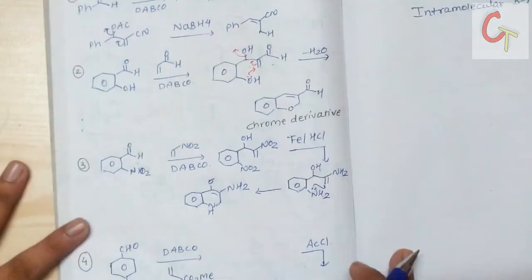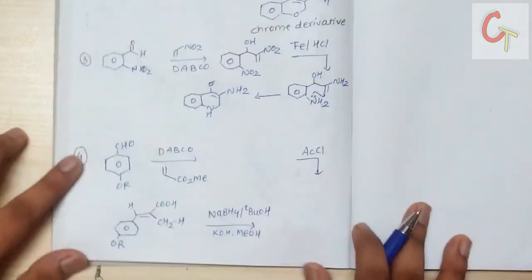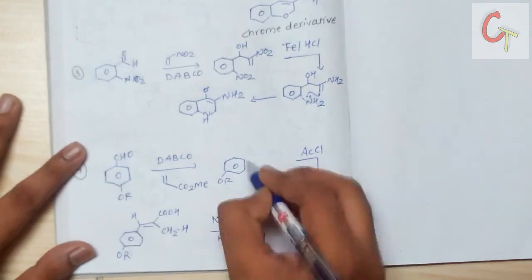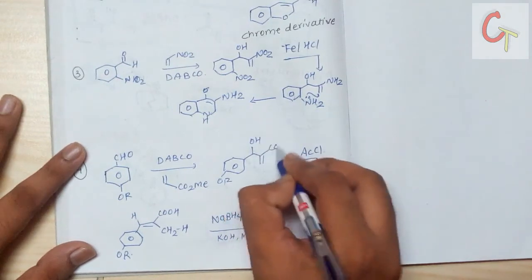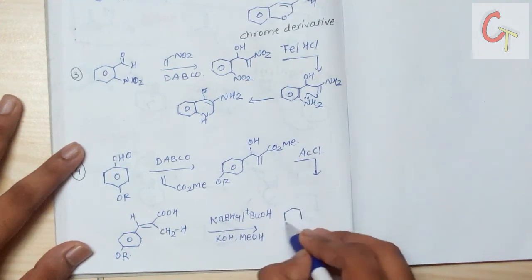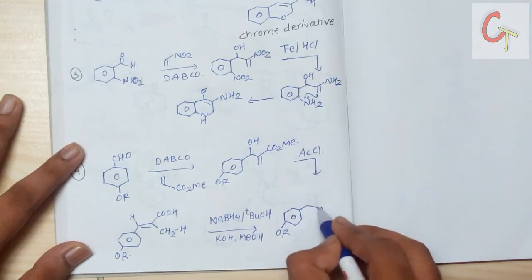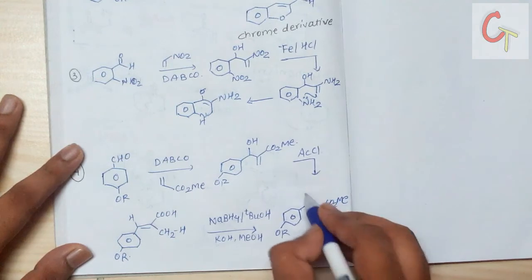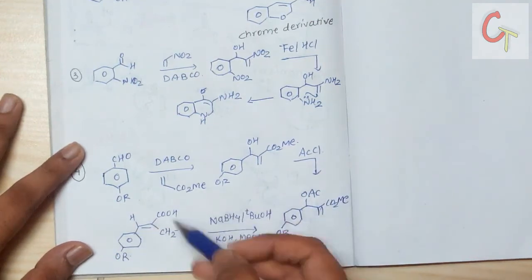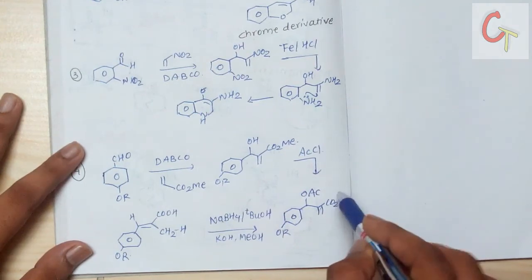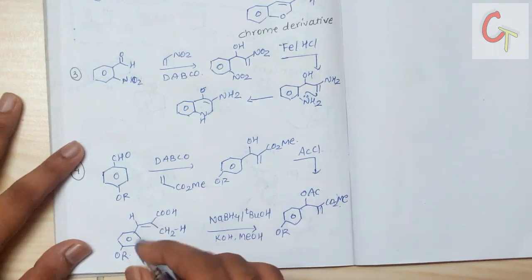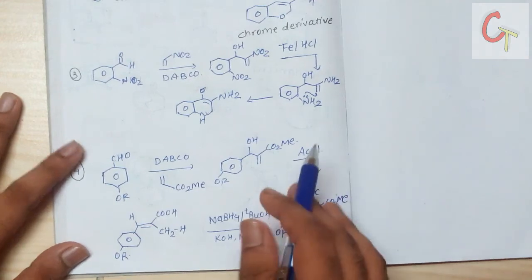Let's look at the next example. A substituted benzaldehyde treated with an ester alkene in the presence of DABCO gives the Baylis-Hillman addition product. If treated with acetyl chloride, the OH converts to an OAc group. Then treatment with NaBH4 followed by KOH gives reduction of the ester group, leading to a derivative of succinic acid.